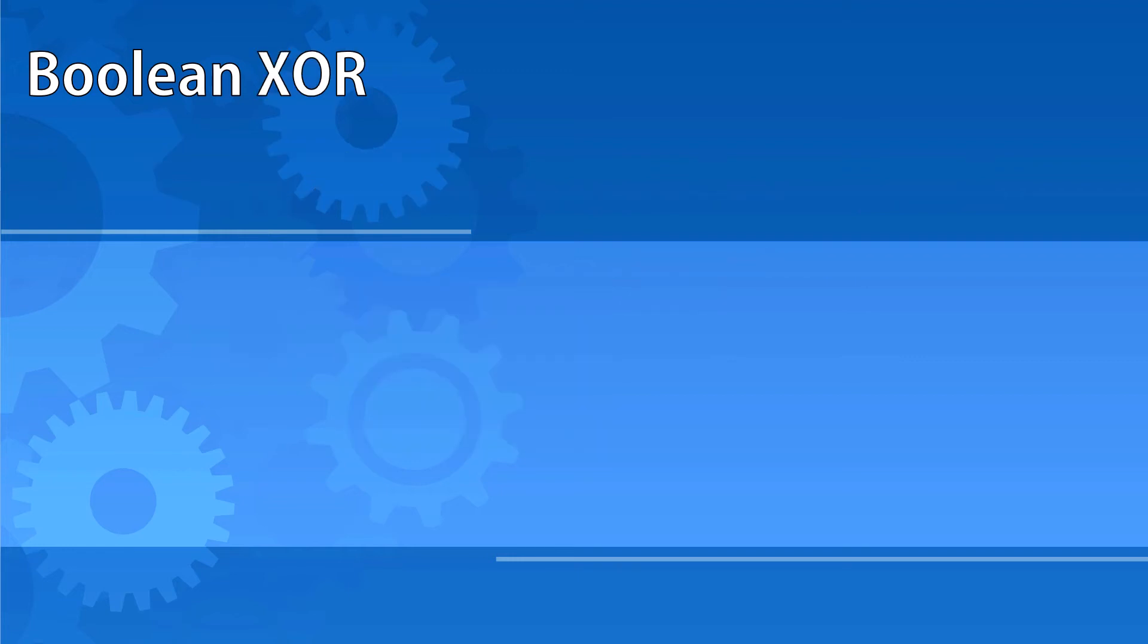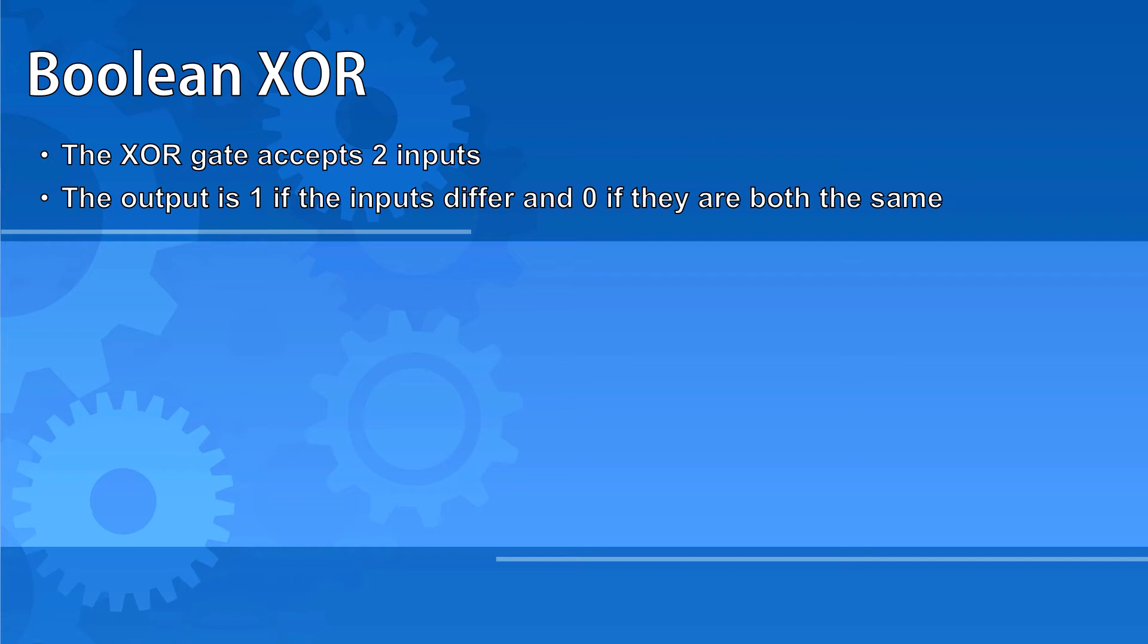The XOR, or exclusive OR gate, accepts two inputs as well. The output is 1 if the inputs differ and 0 if they are both the same. The XOR gate looks exactly like an OR gate with a second curved line at the back of the symbol.